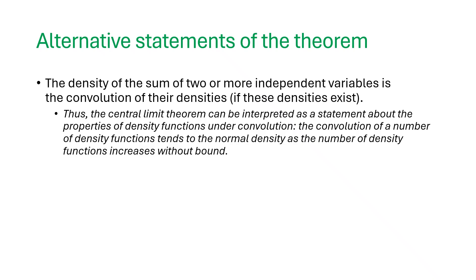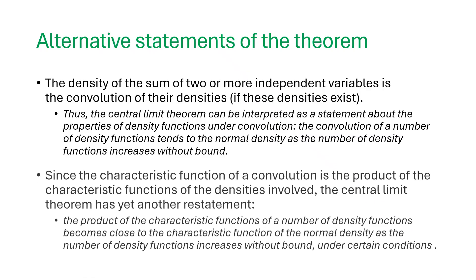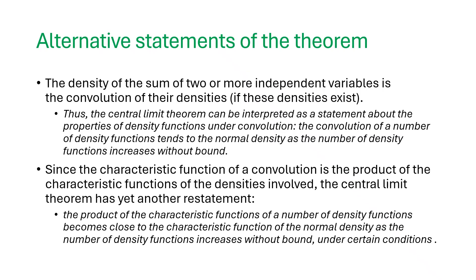The central limit theorem can be interpreted as a statement about the properties of density functions under convolution. And the convolution of a number of density functions tends to be normal density as the number of density functions increases without bound. This means n tends to infinity.